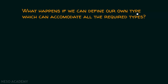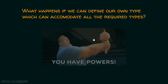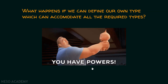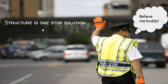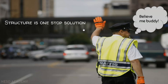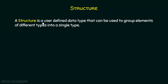What happens if we can define our own type which can accommodate all the required types? You get all the powers. Structure is a one-stop solution. A structure is a user-defined data type that can be used to group elements of different types into a single type. So structure is giving us the power to define our own type and group elements of different types together.